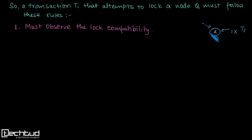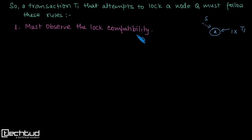But if transaction ti tries to acquire a shared lock on that same node, then since intention exclusive and shared are not compatible, this lock cannot be granted, and the transaction should roll back. So the first rule is that when transaction ti tries to lock a node q, it should observe the compatibility matrix which we have just studied.